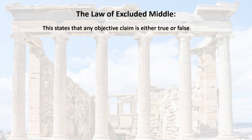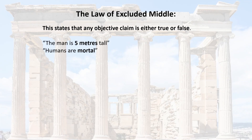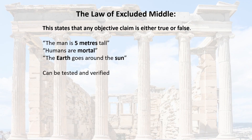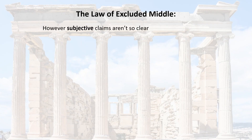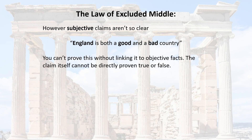Lastly we have the law of excluded middle, which simply states that any objective claim is either true or false — there's no in between. For example: 'The man is five meters tall,' 'Humans are mortal,' 'The earth goes around the sun.' These can all be tested and verified in reality. However, this is only the case for objective claims. Subjective claims aren't so clear. If someone says 'England is both a good and a bad country,' you can't prove this without linking to objective facts — the claim itself cannot be directly proven true or false.